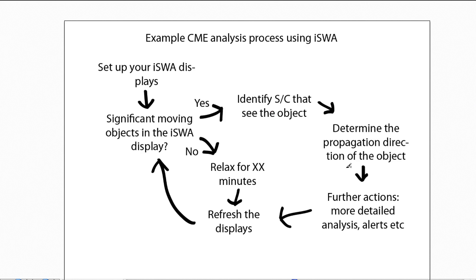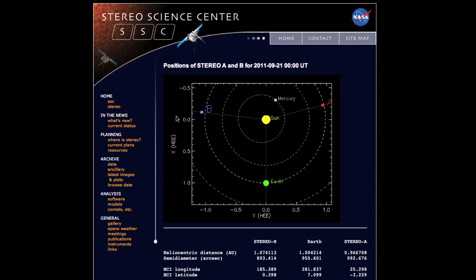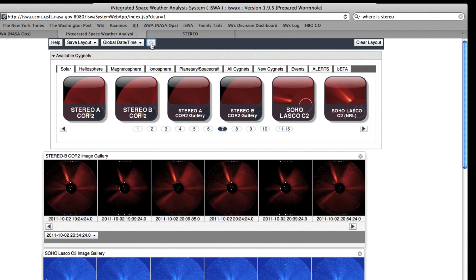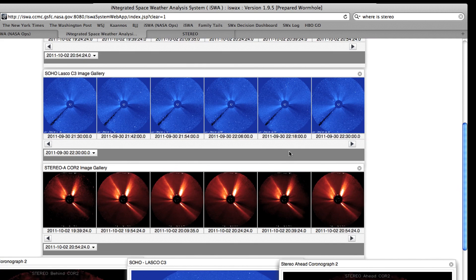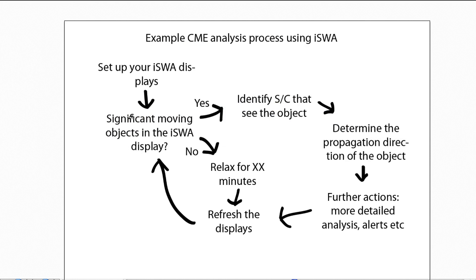So we have determined the propagation direction of the object, and then we can carry out further actions. We can send alerts if necessary — for example, in this case, if we are interested in only Earth-directed CMEs, we would probably not issue alerts. Then we jump back to the core part of the process, refresh the displays to the very latest imagery, and there is really nothing significant propagating at this point in time. So we go back to the relaxing process and the cycle continues. That's an example process you can follow to detect and briefly analyze coronal mass ejections using the Integrated Space Weather Analysis system. That ends our tutorial.